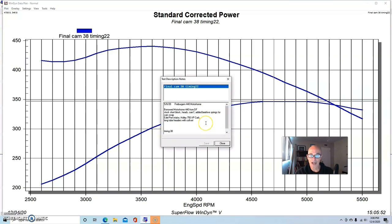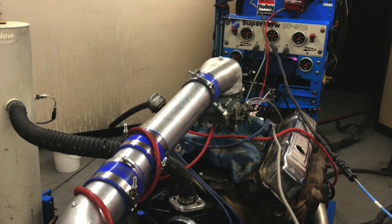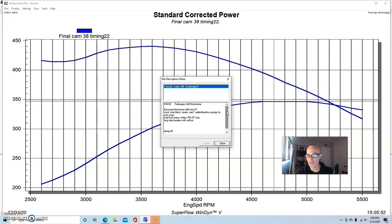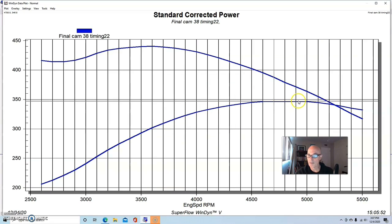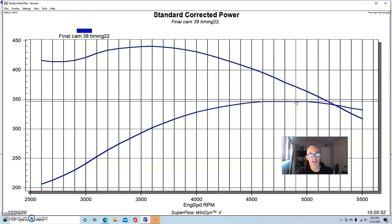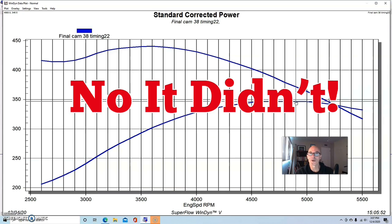This was a 440 and in this condition the 440 was equipped with stock heads, stock short block. We did do a valve spring upgrade because we were going to do a cam - we put beehive springs in it. It had an Edelbrock Performer intake and a Holley 750 XP. It did have long tube headers on it. Run in this condition we had the timing set at about 38 degrees. This was run on pump gas.